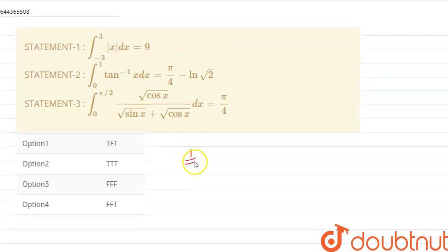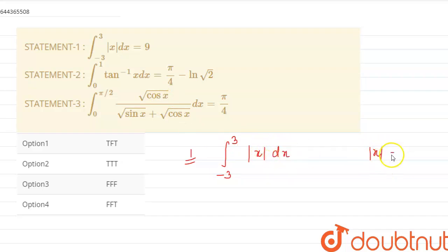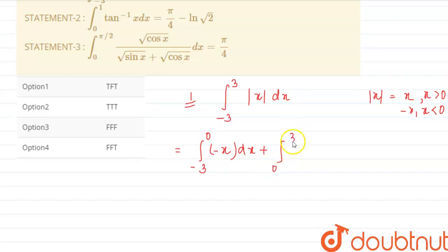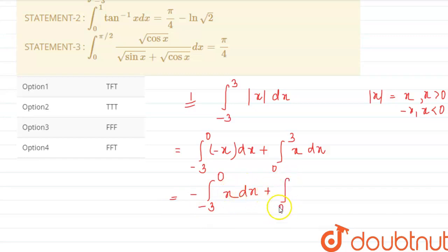Our first statement is the integral from −3 to 3 of |x| dx. As we know, |x| equals x for x greater than zero, and −x for x less than zero. So this becomes: ∫₋₃⁰ (−x) dx + ∫₀³ x dx.